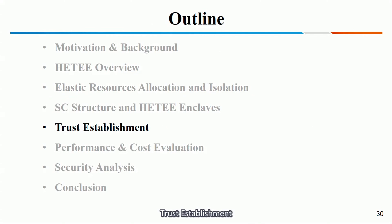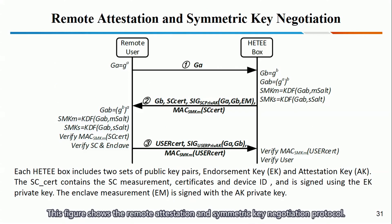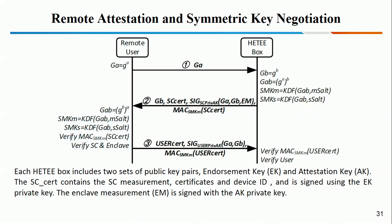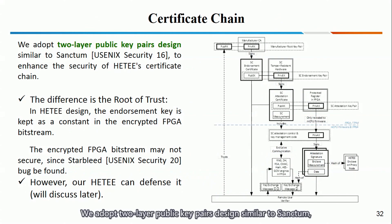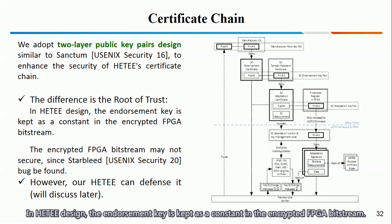Trust establishment. This figure shows the remote attestation and symmetric key negotiation protocol. Each HDT box includes two sets of public key pairs: an endorsement key and an attestation key. We adopt a two-layer public key design, similar to Sanctum, to enhance the security of HDT's certificate chain. The difference is the root of trust: in the HDT design, the endorsement key is kept as a constant in the encrypted FPGA bitstream.